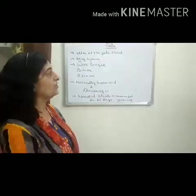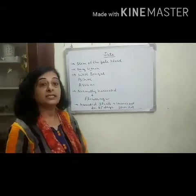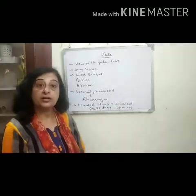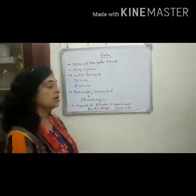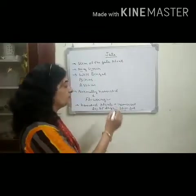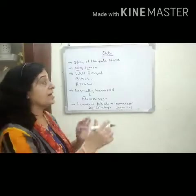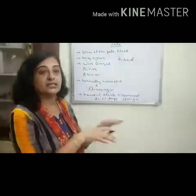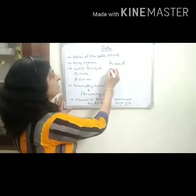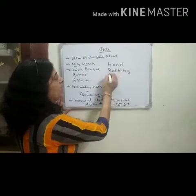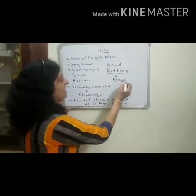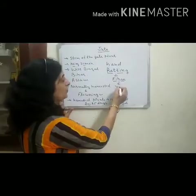When the jute plants mature and the flowers have grown, then it is harvested. The stem of the harvested plant is immersed in water for 20 to 25 days so that the stem rots. After that, from these rotted stems, the fibers are separated by hand. This complete process of rotting of the stem and separation of fibers from the stem is known as retting.